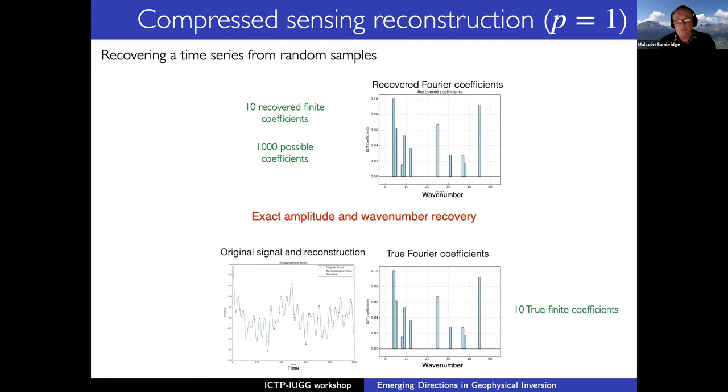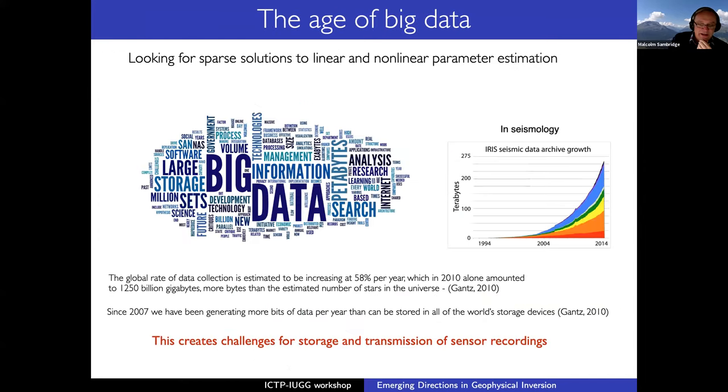Now, where would this be useful? Well, as I mentioned before, from Gantz, I've put my quote in the number of data that's growing, and he also said that in 2007, we've been generating more bits of data a year that can be stored in all the world's storage devices. And so this has been taken up by a number of fields now, by this application in the Earth Sciences and seismology. And we have enormous databases. The idea behind compressive sensing is that we could perhaps not collect all that data, but collect random samples of the data, and then use compressive sensing to either reconstruct the data, and if the circumstances are right, we can do so with higher accuracy, or use the limited data and combine the idea of reconstruction using the inversion as part of the analysis of the data.